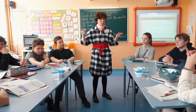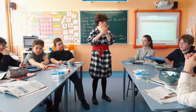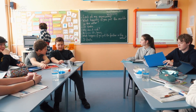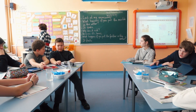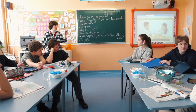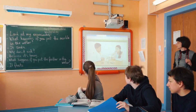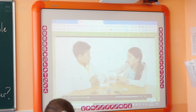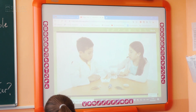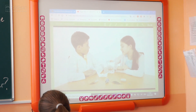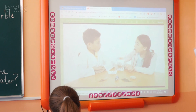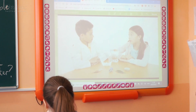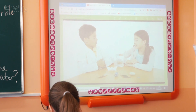When you do experiments, put on protective gloves. First, we are going to watch an experiment. What is the experiment about? What happens if you put the marble in the water? It sinks. Why does it sink? Because it's heavy. What happens if you put the feather in the water? It floats. Why does it float? Because it's light. So why does a boat float? Well, it's heavy, but its surface area is very big. And what happens if you fill the boat with water? It sinks, because now it's much heavier.